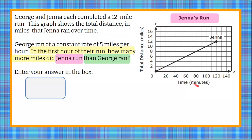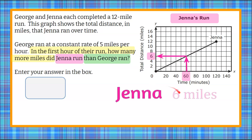The x-axis is in minutes, so to do one hour we need 60 minutes — 60 minutes in an hour. We're going to go up from 60 and then over to the y-axis, which is our miles. We can see that in 60 minutes, Jenna ran 6 miles. So we know that in the first hour, Jenna ran 6 miles.